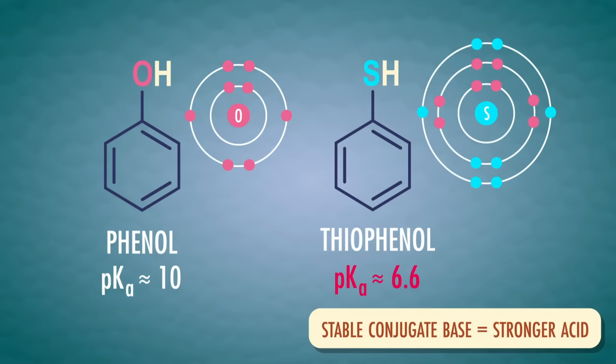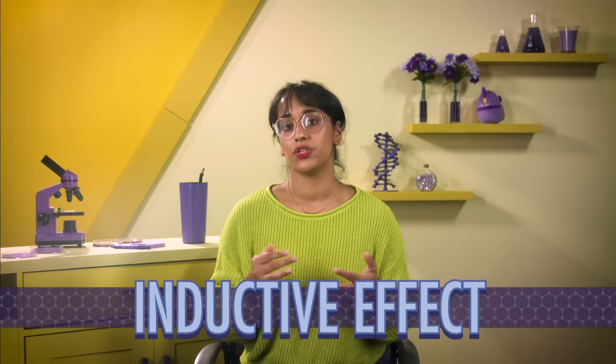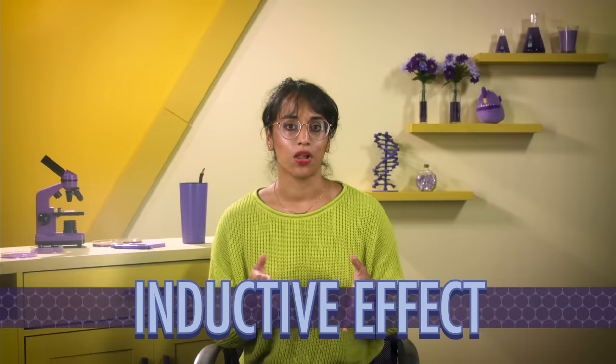The third key to pKa is hidden in covalent bonds. The inductive effect has to do with electronegativity throughout a molecule, with more electronegative atoms pulling the negative charge toward them through bonds.